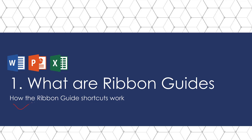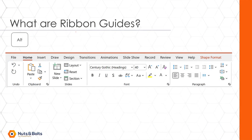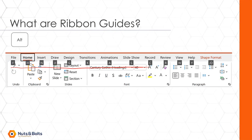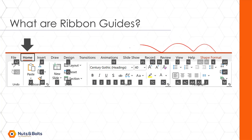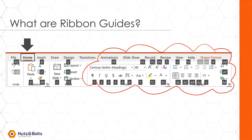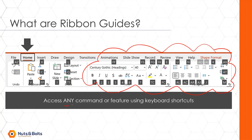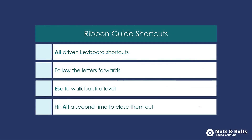So what are Ribbon Guides and how do they work in Word, PowerPoint, and Excel? Well, if this is the PowerPoint ribbon, by hitting the Alt key, I can start a letter sequence across the top of my tabs, which will allow me to drill into any specific tab. For example, if I hit H on my keyboard, the Home tab will open up and every command or feature on the Home tab lights up with a Ribbon Guide that I can use — which is how I can access any command or feature in Word, PowerPoint, and Excel simply using keyboard shortcuts. These are Alt-driven keyboard shortcuts. You follow the letters forward to move forward through the Ribbon. You can use the Escape key to walk back a level, and you can always hit Alt a second time to close out of your Ribbon Guides.